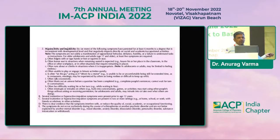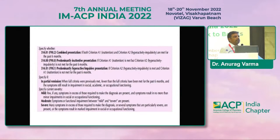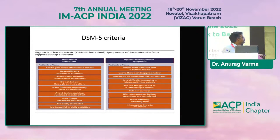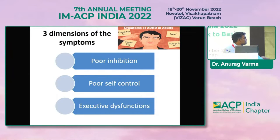There are mild, moderate, and severe types where all the ADHD symptoms are present. What we see mainly in adults are inattention and the combined types of ADHD. To make it more simple, people with ADHD have problems of inhibition, poor self-control, and executive dysfunctions.